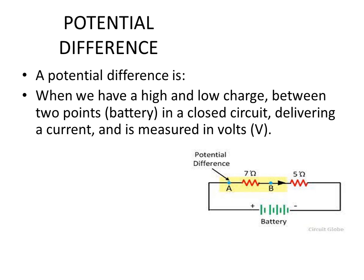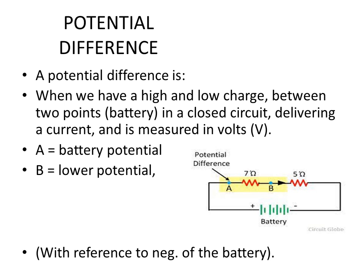In the diagram to the right, A equals the battery potential which might be 9 Volts. After the current has passed through the 7 Ohm resistor we will have a voltage drop which is lower than A if measured at B. The potential difference is always measured with reference to the negative of the battery.